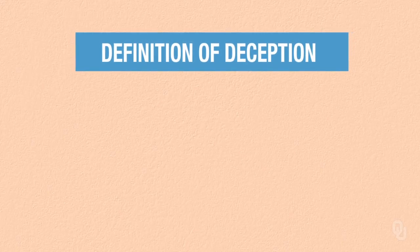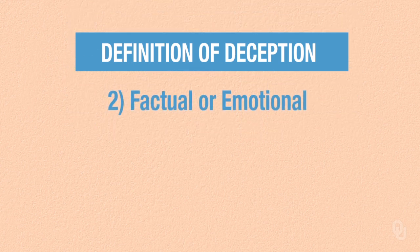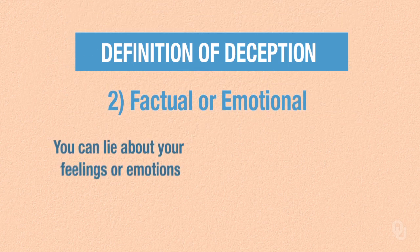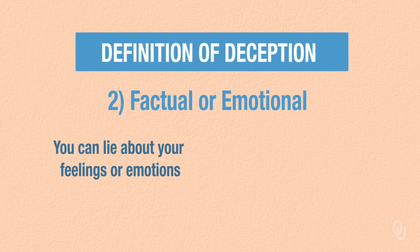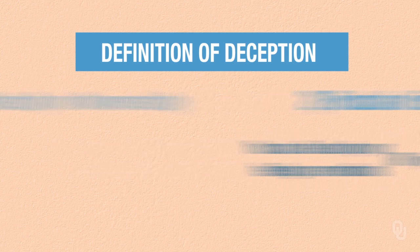First of all, there must be a deliberate attempt — it must be intentional. Second, it can be factual or emotional. You can lie about your feelings or emotions, or you can lie about a fact that you know and tell someone something that is false.